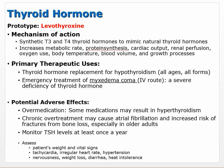To raise T3 and T4, we give a synthetic thyroid hormone called levothyroxine. It mimics natural thyroid hormones and increases metabolic rate, involving protein synthesis, cardiac output, renal perfusion, oxygen use, body temperature, blood volume, and growth processes overall. The primary therapeutic use is replacement for hypothyroidism in all ages and all forms. If thyroid hormone or TSH levels are low, levothyroxine can bring those back into a normal range.